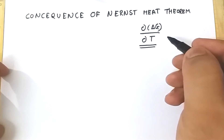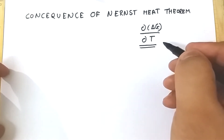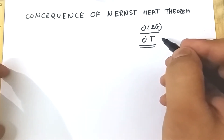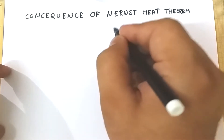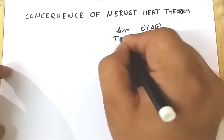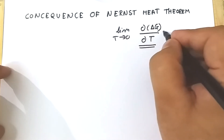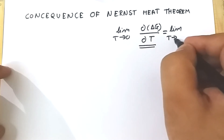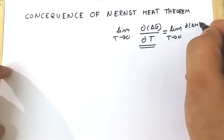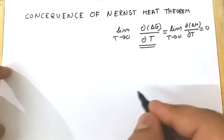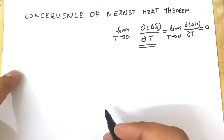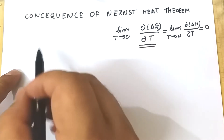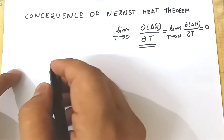The third law of thermodynamics is basically derived from the Nernst Heat Theorem. The mathematical form of Nernst Heat Theorem states that the limit as T tends to zero of d(ΔG)/dT equals the limit as T tends to zero of d(ΔH)/dT, and both these values are equal to zero as temperature tends to zero. Today we are going to discuss the consequences of Nernst Heat Theorem.